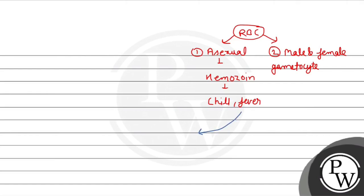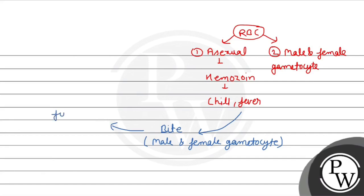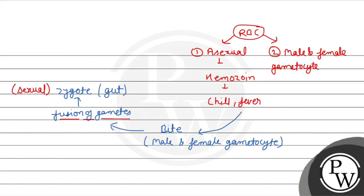Now, if another Female Anopheles mosquito bites the infected person, it picks up the male and female gametocytes. Inside the mosquito, there will be fusion of gametes — what happens? It becomes a zygote. Inside the Female Anopheles, sexual reproduction takes place: fusion of gametes → zygote → sporozoid form.